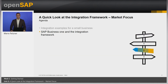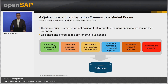SAP Business One is a fully functioning Enterprise Resource Planning (ERP) application specifically designed and priced for small businesses. It is really like an integration platform for a company's complete core business processes, integrating all business management functionality — sales, purchasing, accounting, inventory management, production, service, and analytics — in a single database. So all the data is already integrated in the database, which makes using it for integration much easier.